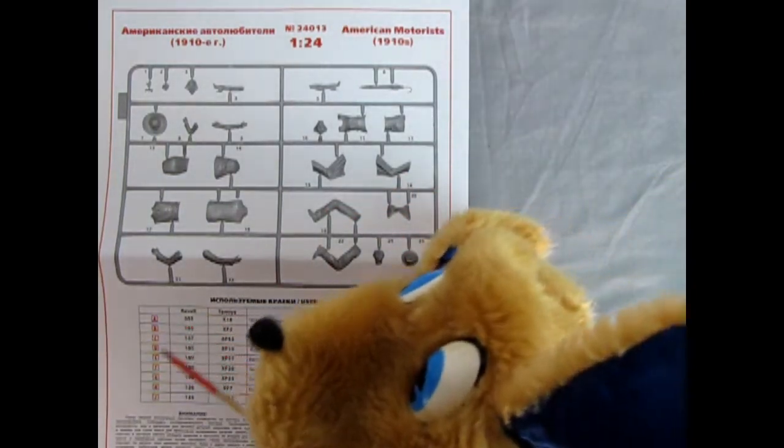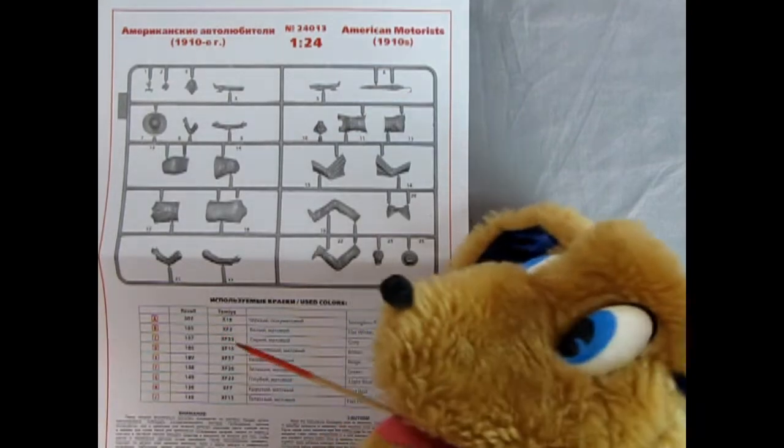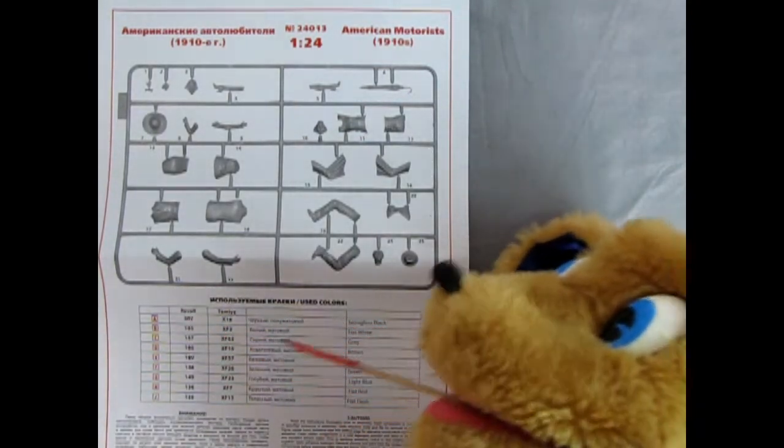You get a parasol umbrella and then the hat for the lady as well as the cap for the man. And then here we've got our color call outs with the Revell and Tamiya paints. And there's the Ukrainian language there.